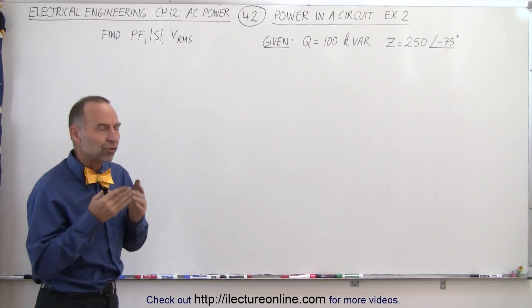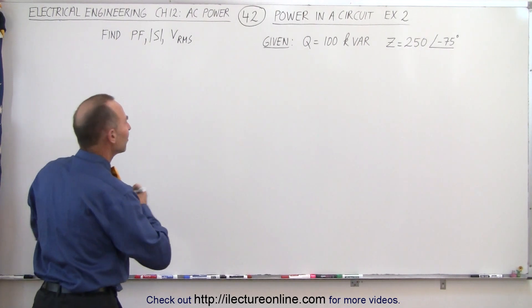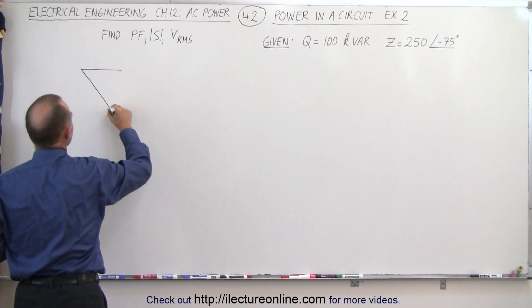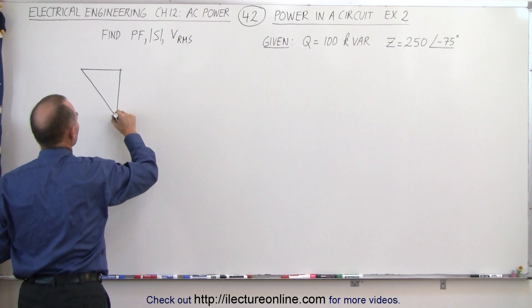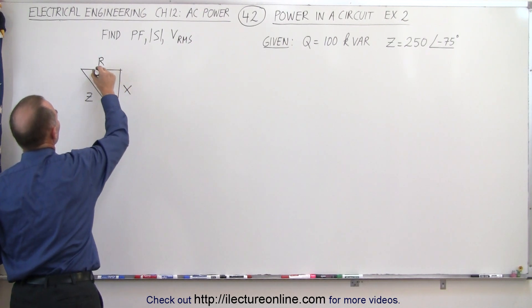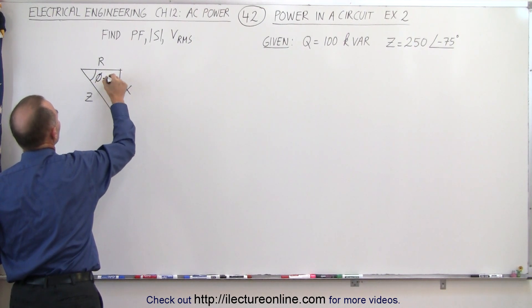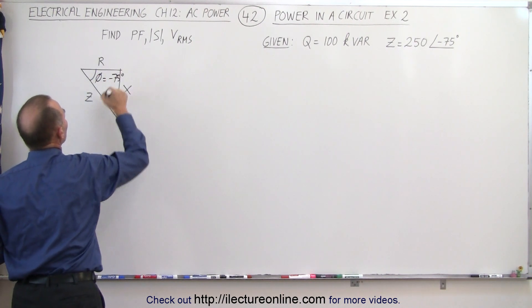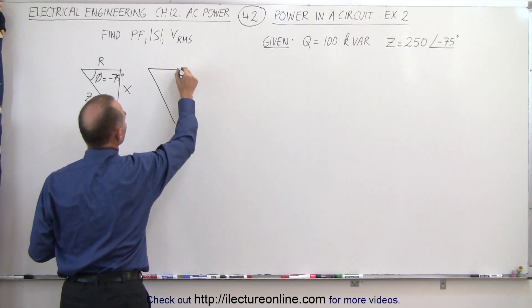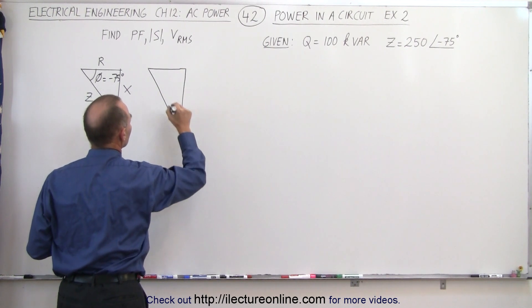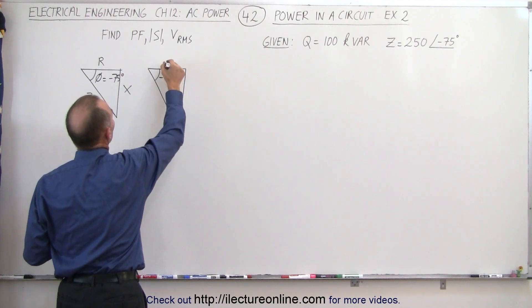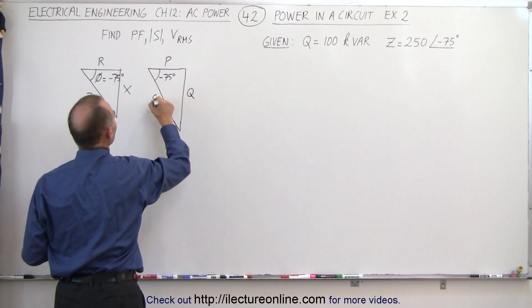Let's draw some triangles. We have a negative phase angle, so our triangles will look like this. We have the impedance, we have the resistance, and we have the reactance, and the phase angle phi is equal to minus 75 degrees. We have a similar power triangle with a phase angle of minus 75 degrees, with P, Q, and S.